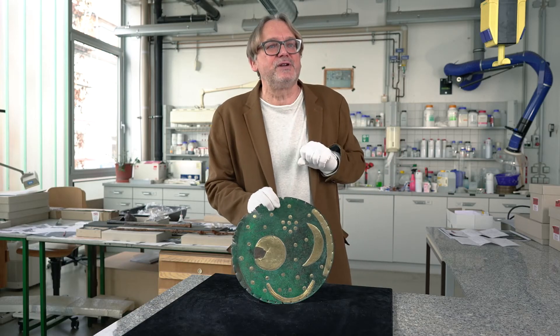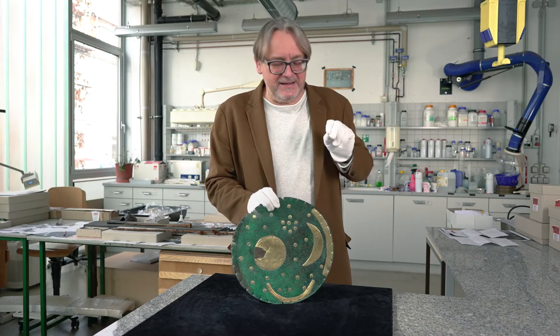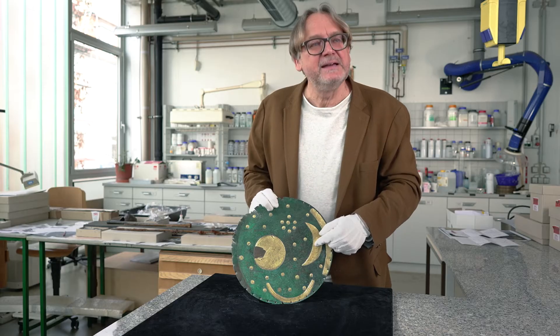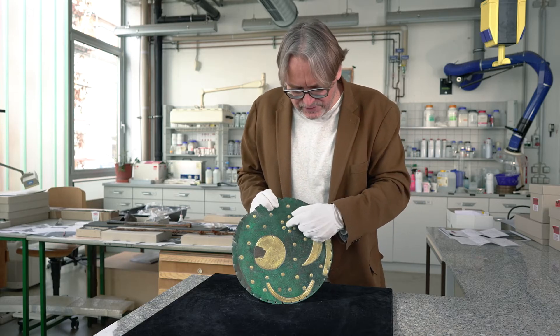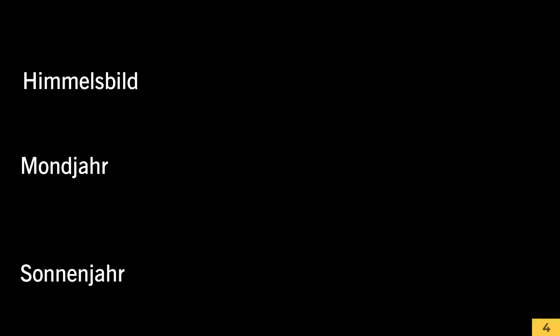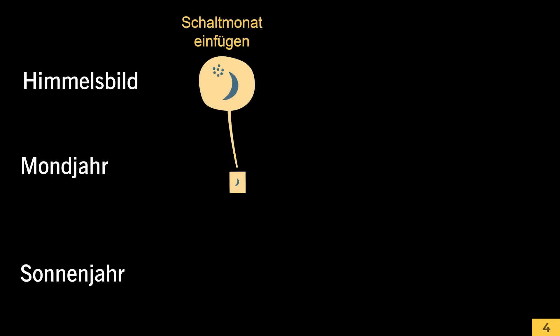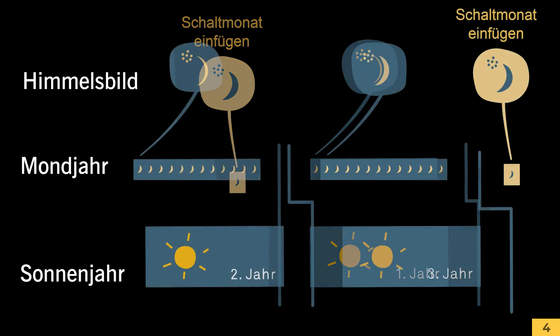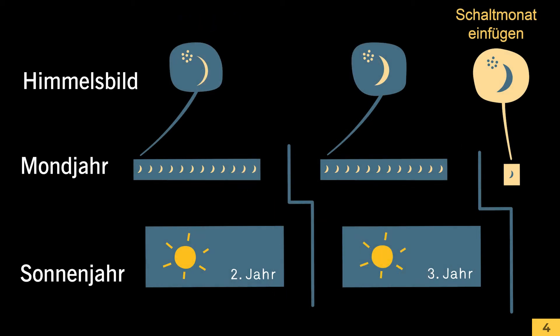Dazu muss man eigentlich nur alle drei Jahre 30 Tage – also einen Monat – einfügen. Die Frage ist: Wann fügt man diesen Monat ein? Das ist die sogenannte Mul-Apin-Regel. Man erkennt sie hier in der Konjunktion des vier Tage alten Mondes mit den Pleiaden-Sternen. Der Mond ist im ersten Jahr der Differenz schmal und wird immer dicker. Wenn er so dick ist – das sieht man himmelsmechanisch –, fügt man den Monat ein, und Sonnen- und Mondkalender sind wieder im Takt. So kann man einen validen Lunisolarkalender machen, so wie wir ihn kennen.